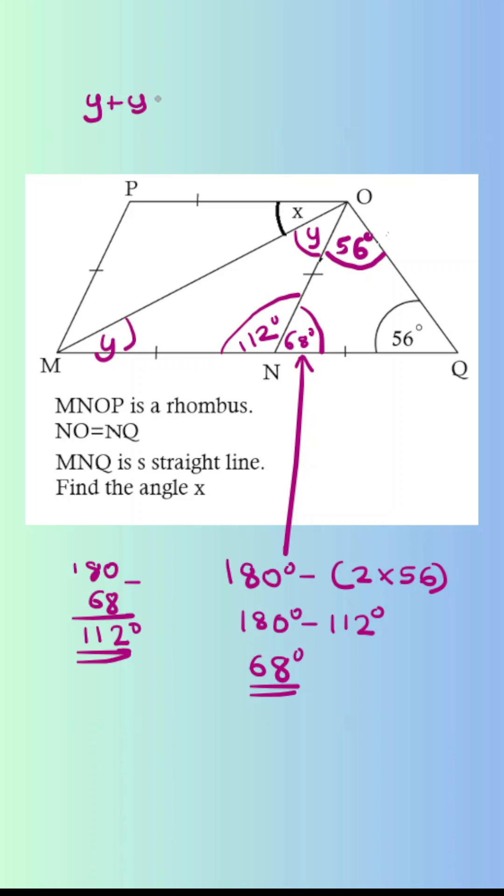So I know y add y add 112 is 180—interior angles of a triangle. Move it to this side so 2y is equal to 68, so y is just half of that, 34 degrees.